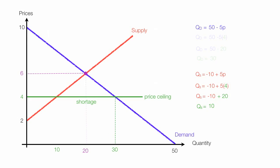Quantity supplied is where the supply curve and price ceiling intersect. The shortage can be calculated by taking quantity demanded minus quantity supplied, which is 30 minus 10, so the shortage is equal to 20.